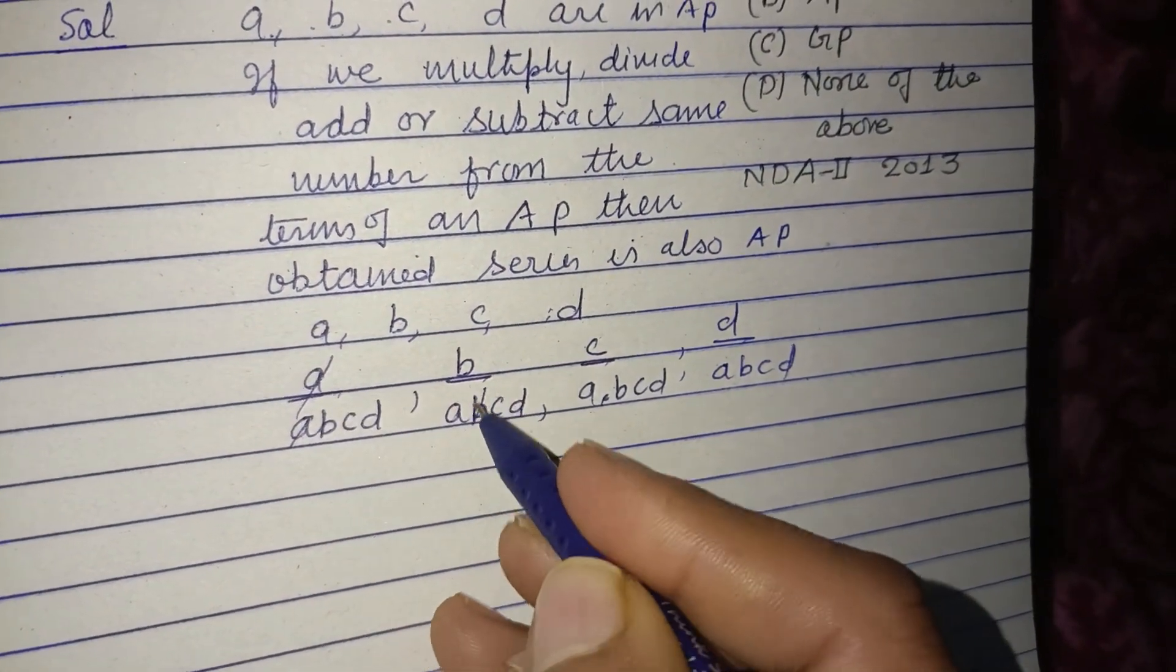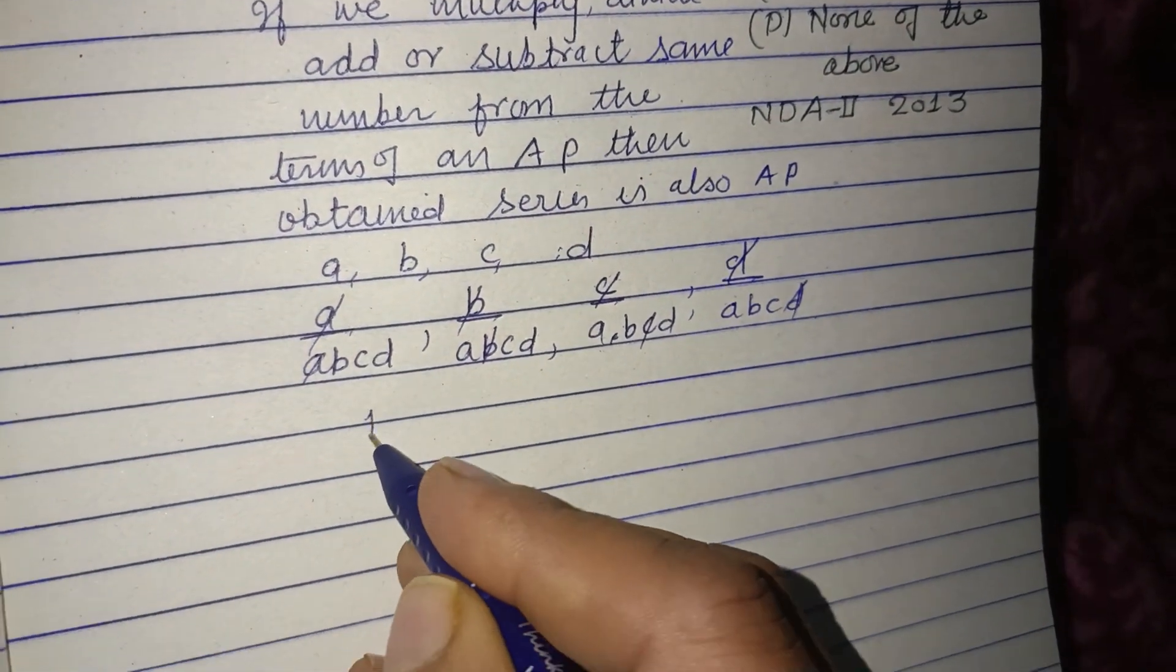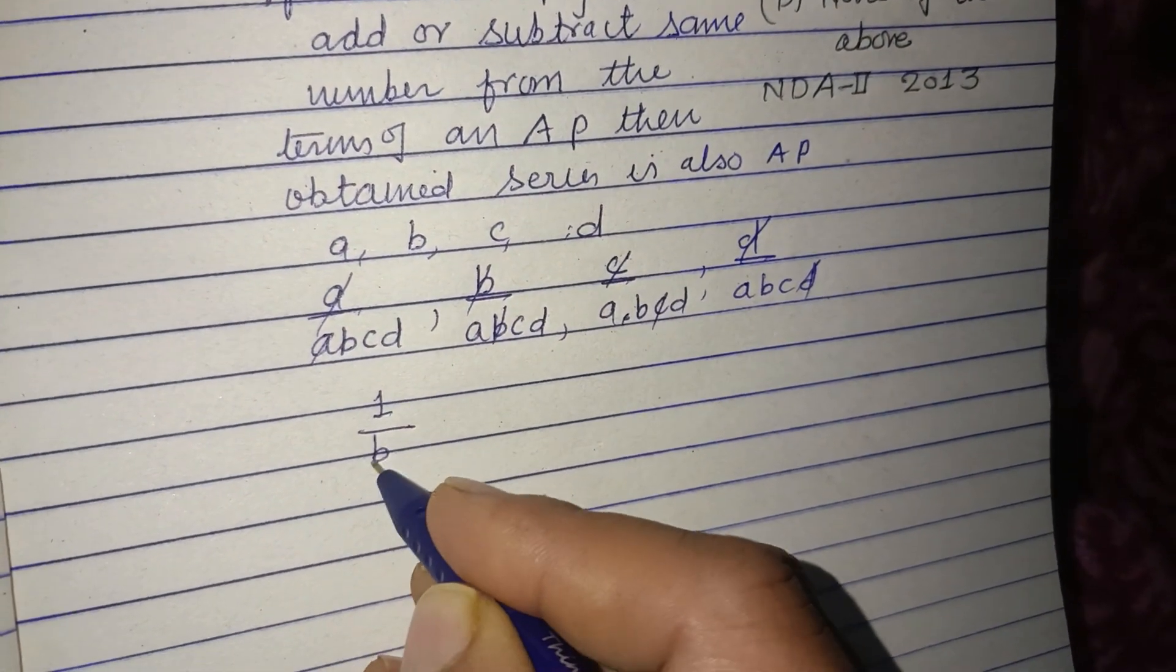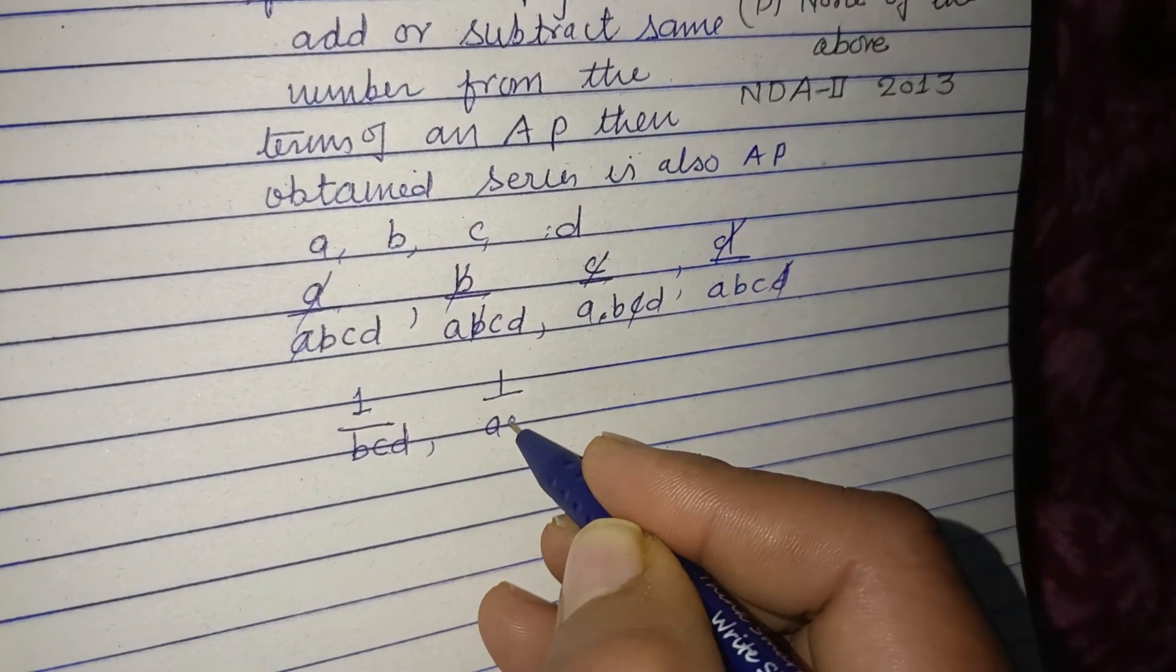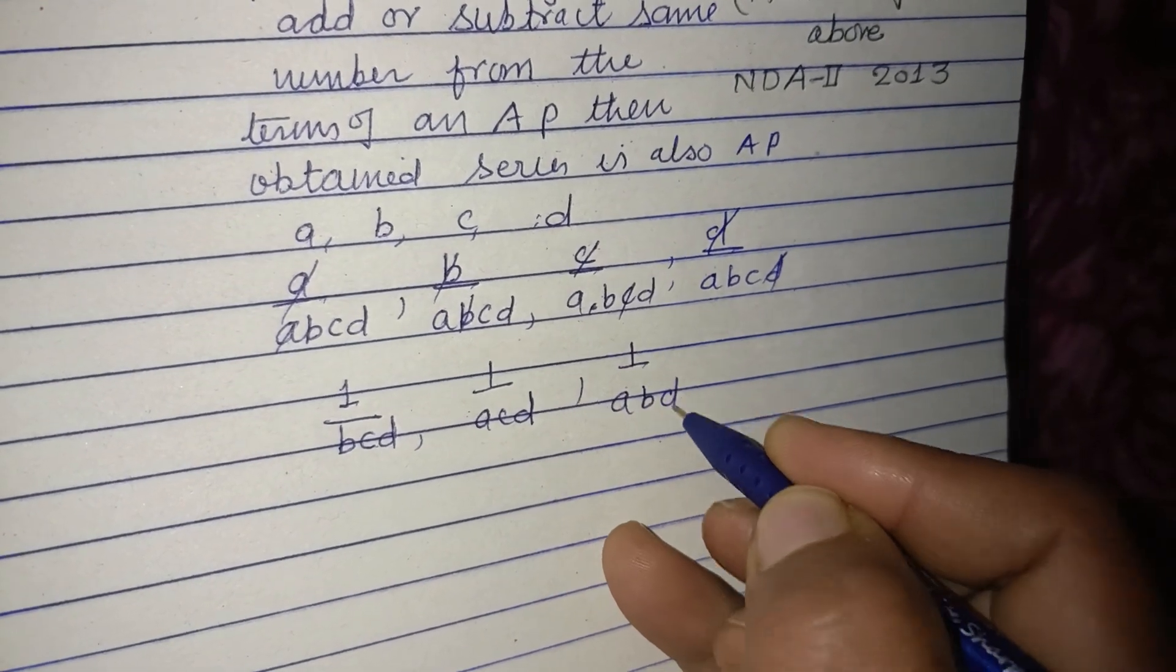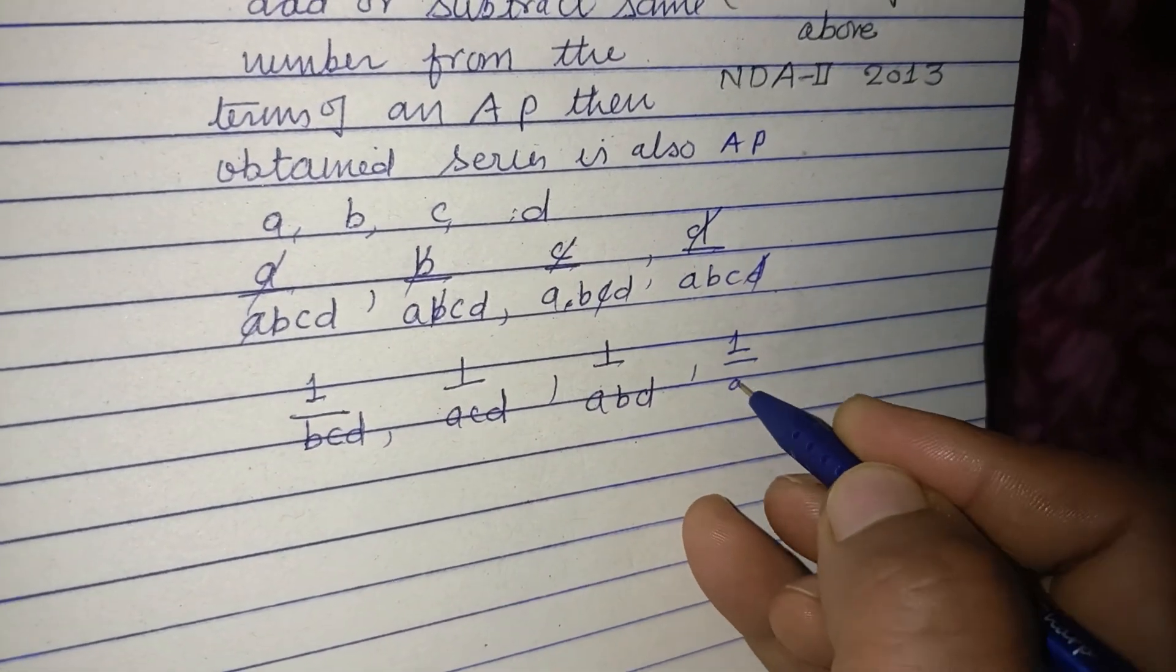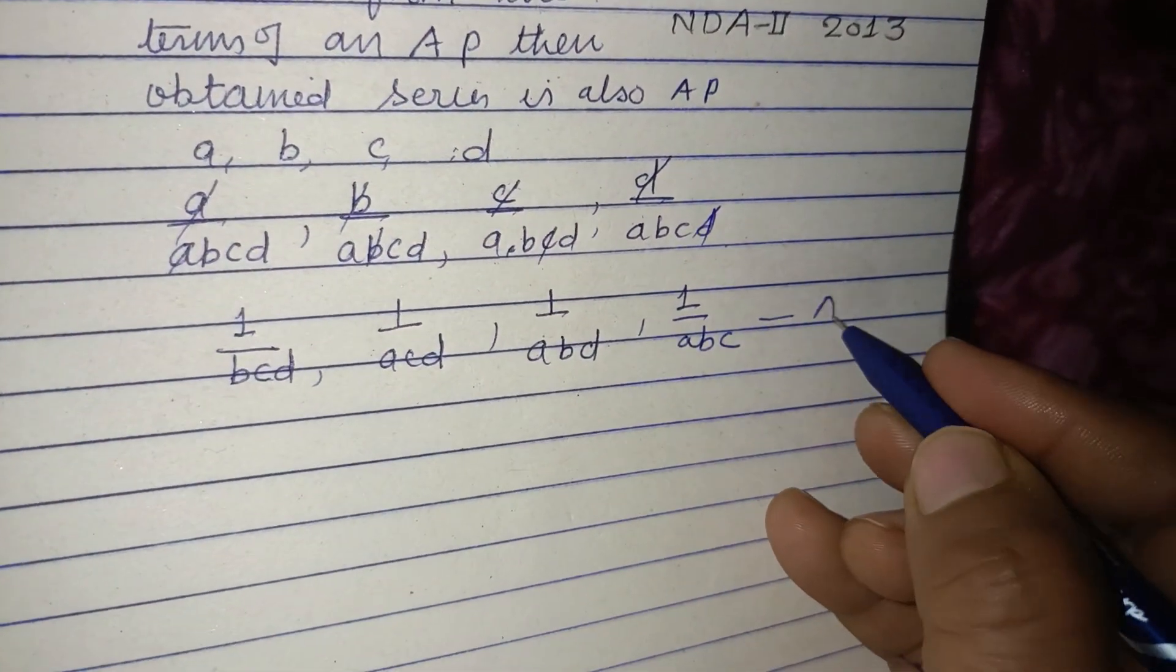A cancels here, here B is cancelled, here C is divided out, and D divided out. So we got 1 upon BCD, 1 upon ACD, 1 upon ABD, 1 upon ABC. These are in AP.